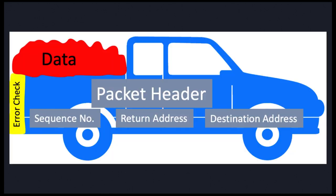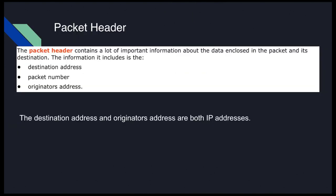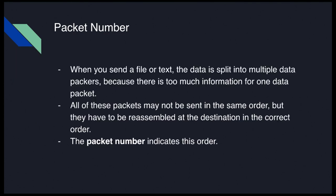Here's another representation. The packet header contains the return address, destination address, and sequence number — which is the same as the packet number. Then we've got error checking in our trailer, and the data in our payload.